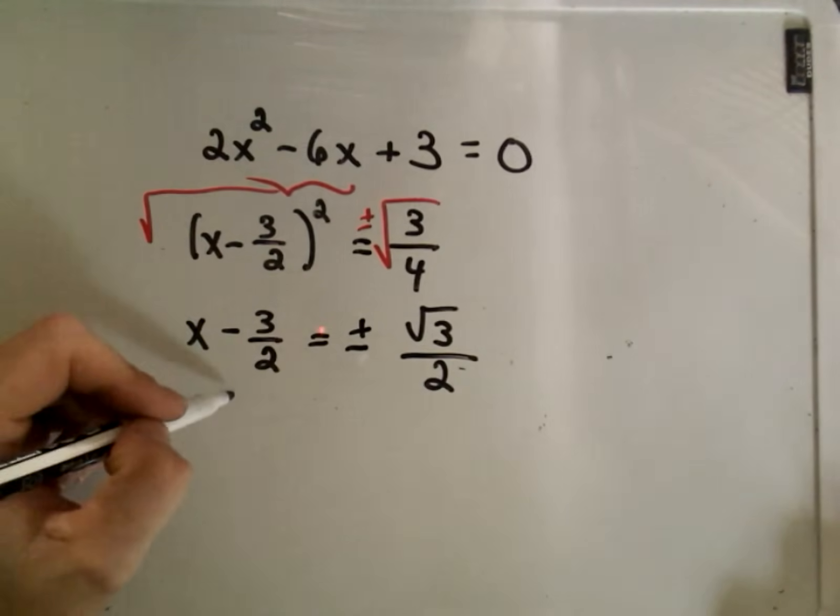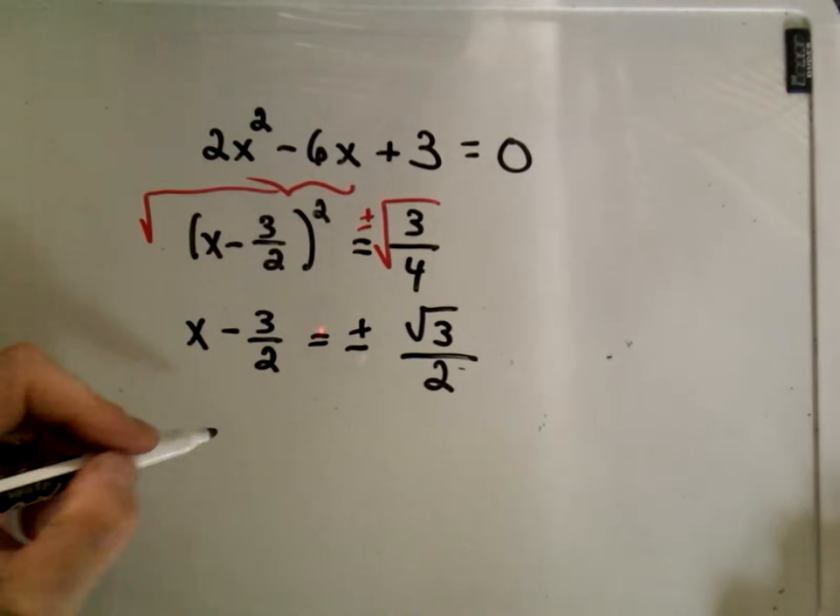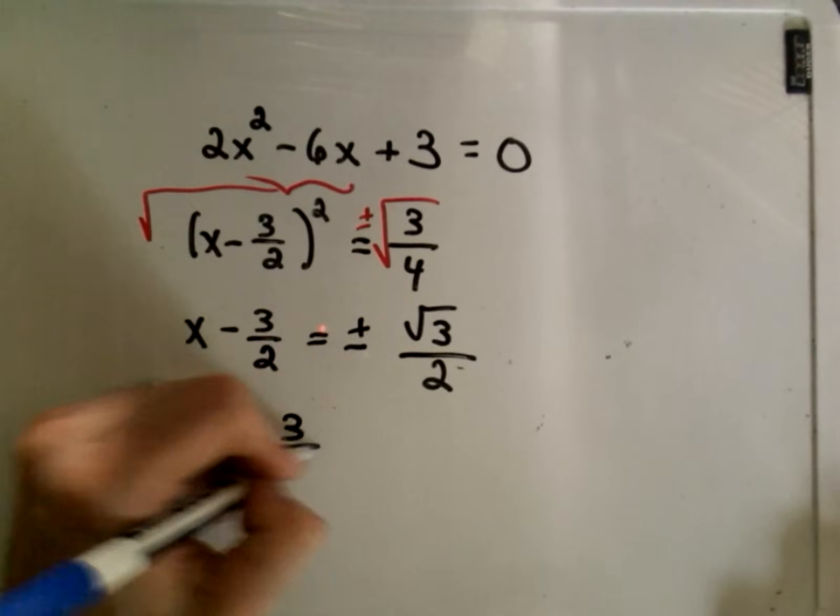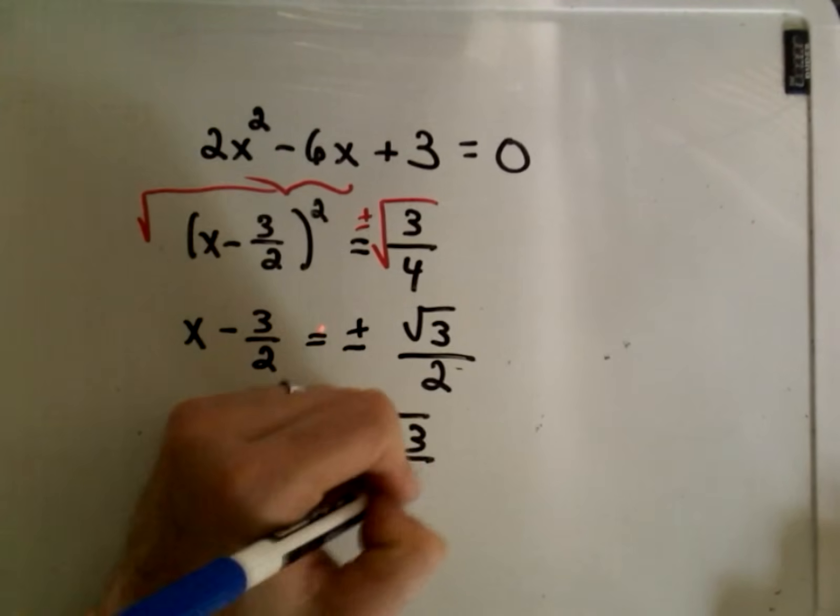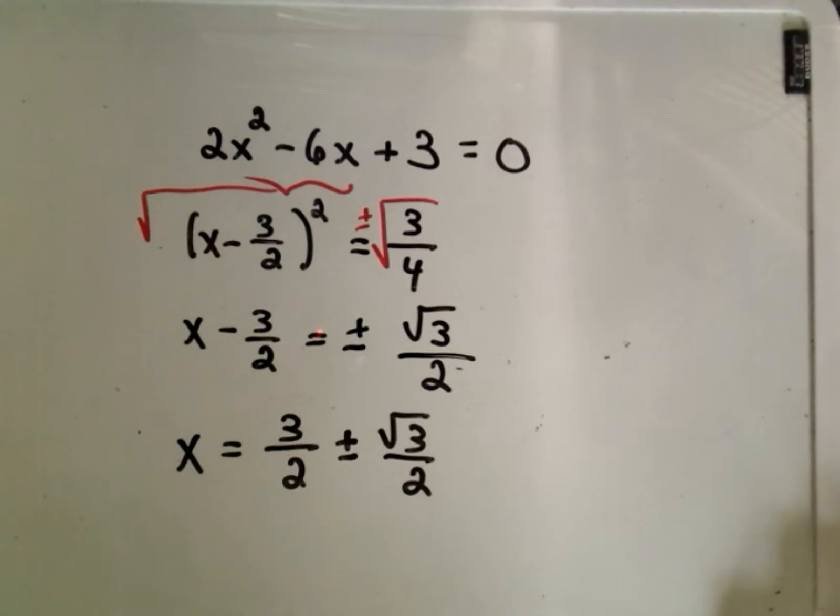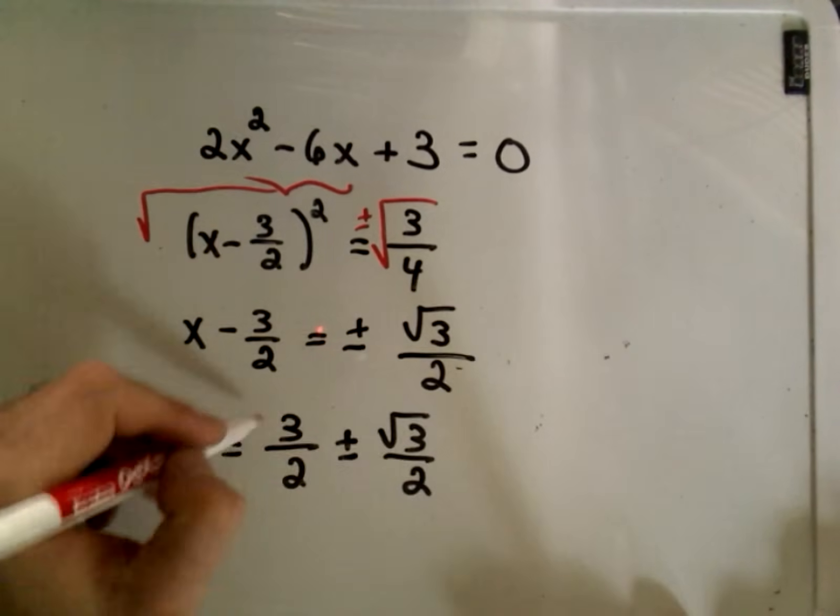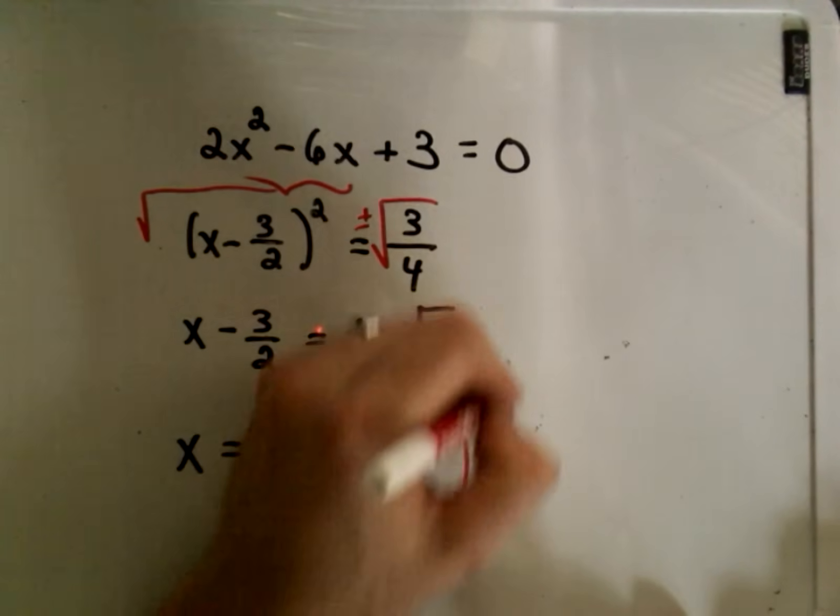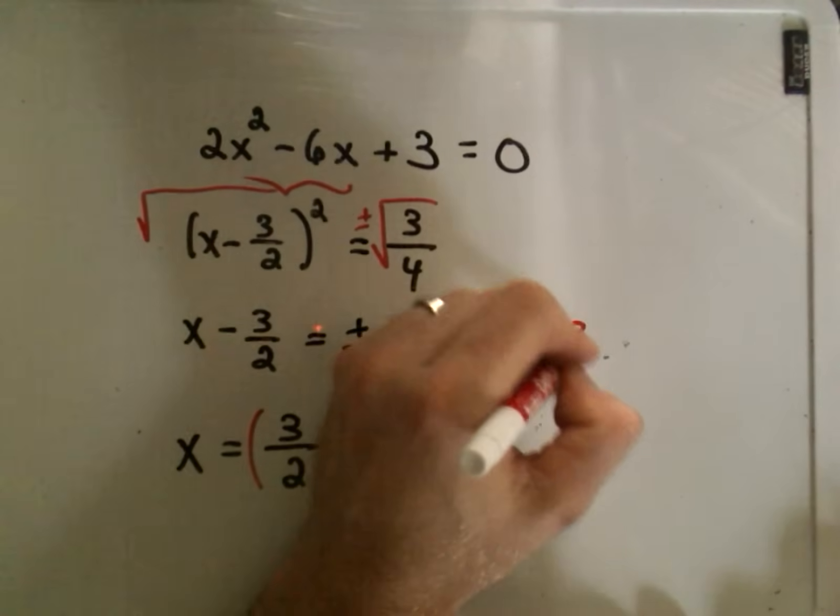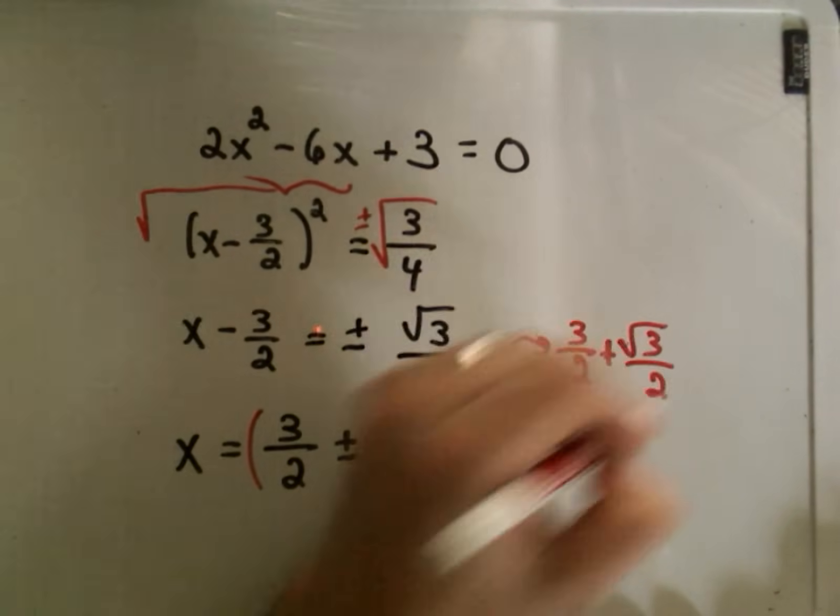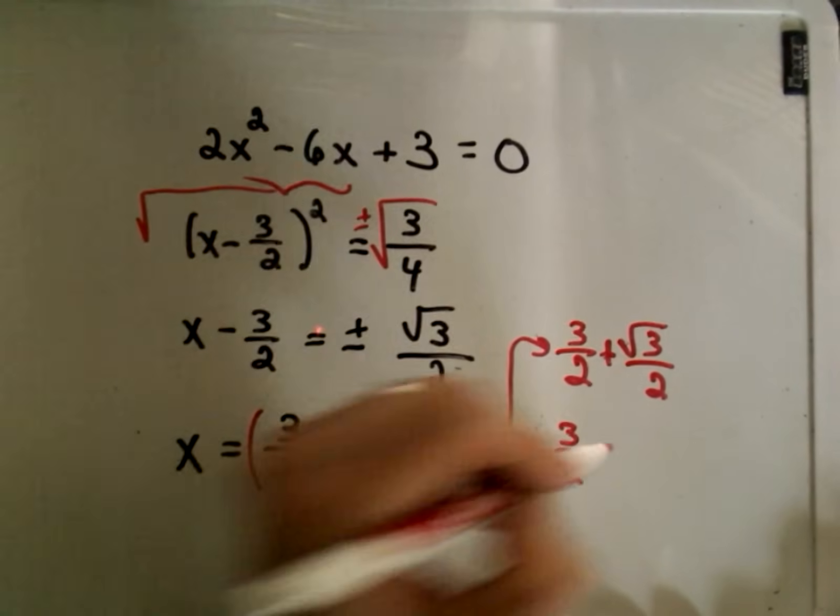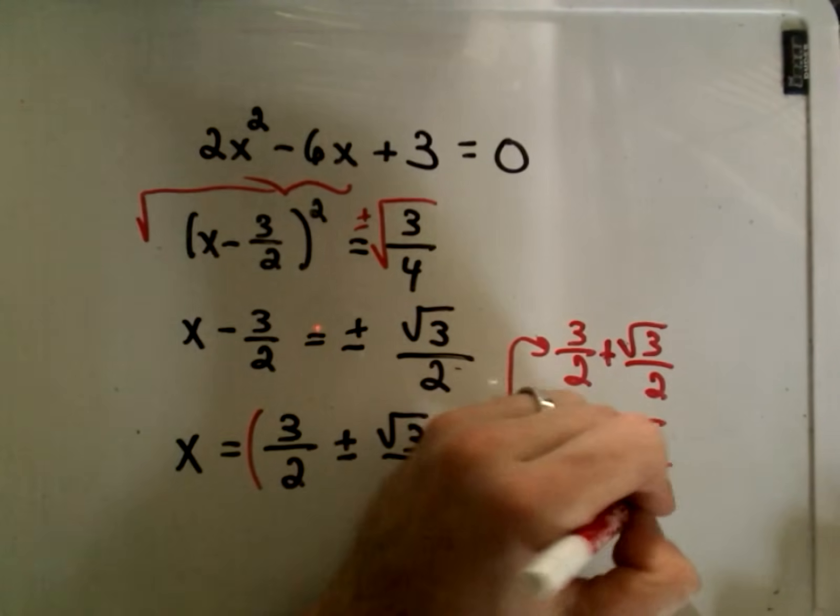And lastly, all we'll do is we'll add 3 halves to both sides. So that'll give us x equals 3 over 2 plus or minus square root of 3 over 2. So this gives us our two solutions. If we take this number and break it up, that means we have two solutions in this case: 3 halves plus square root of 3 over 2, and then our other solution is 3 halves minus square root of 3 over 2.